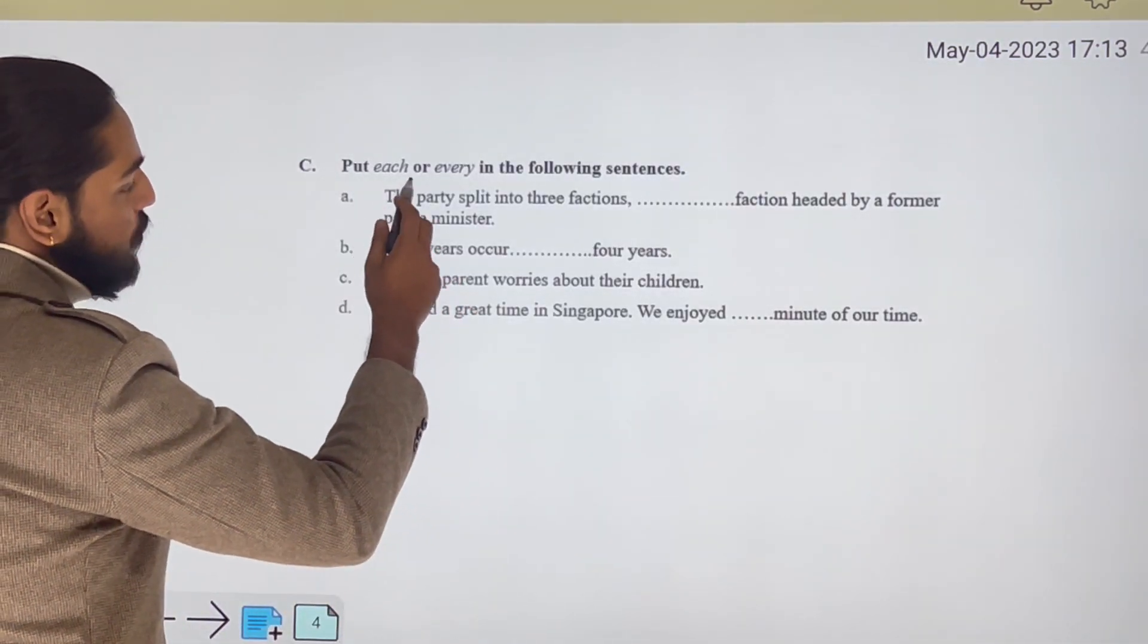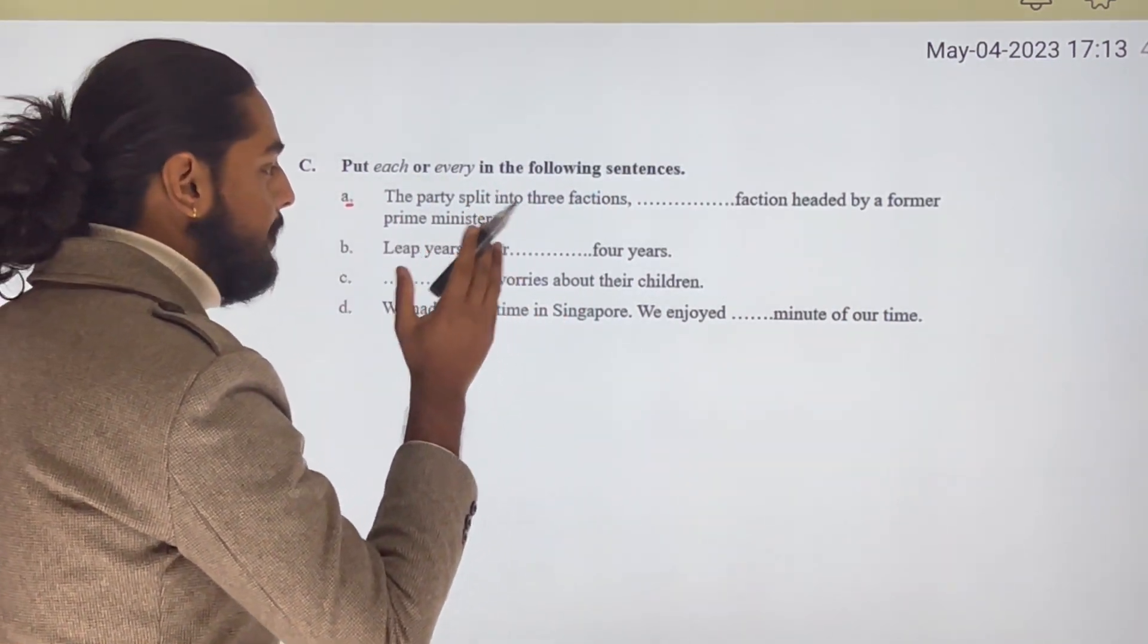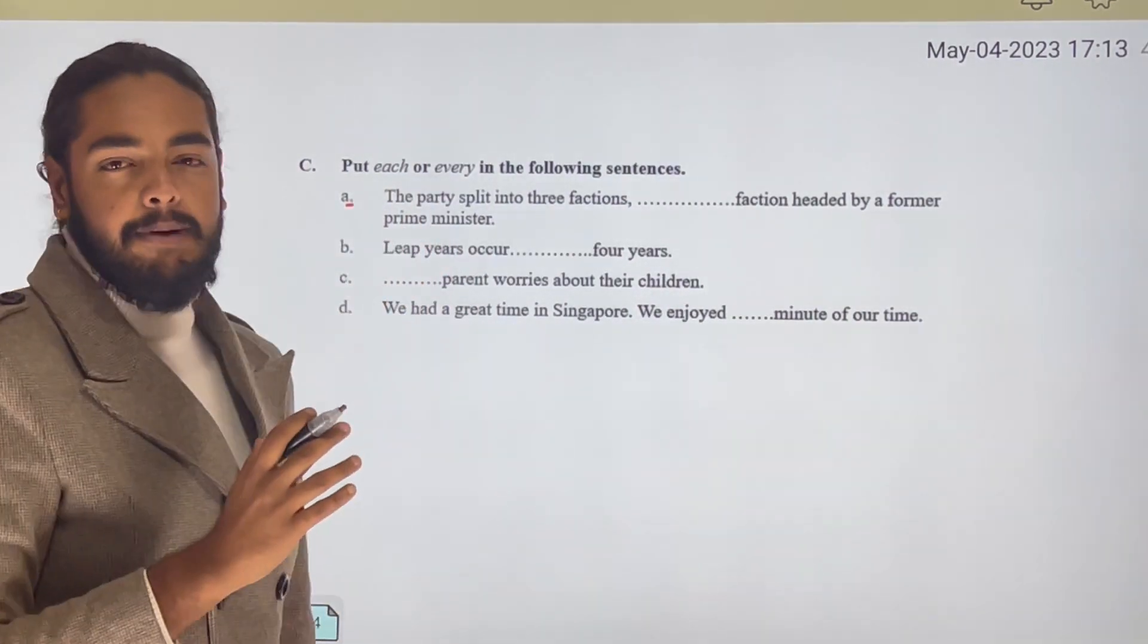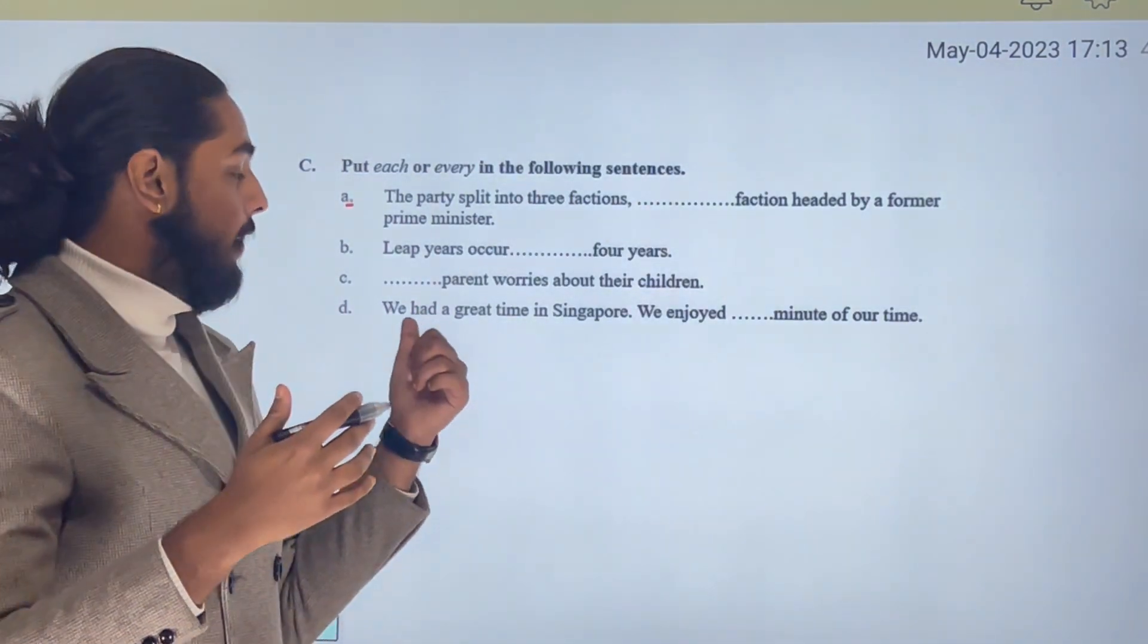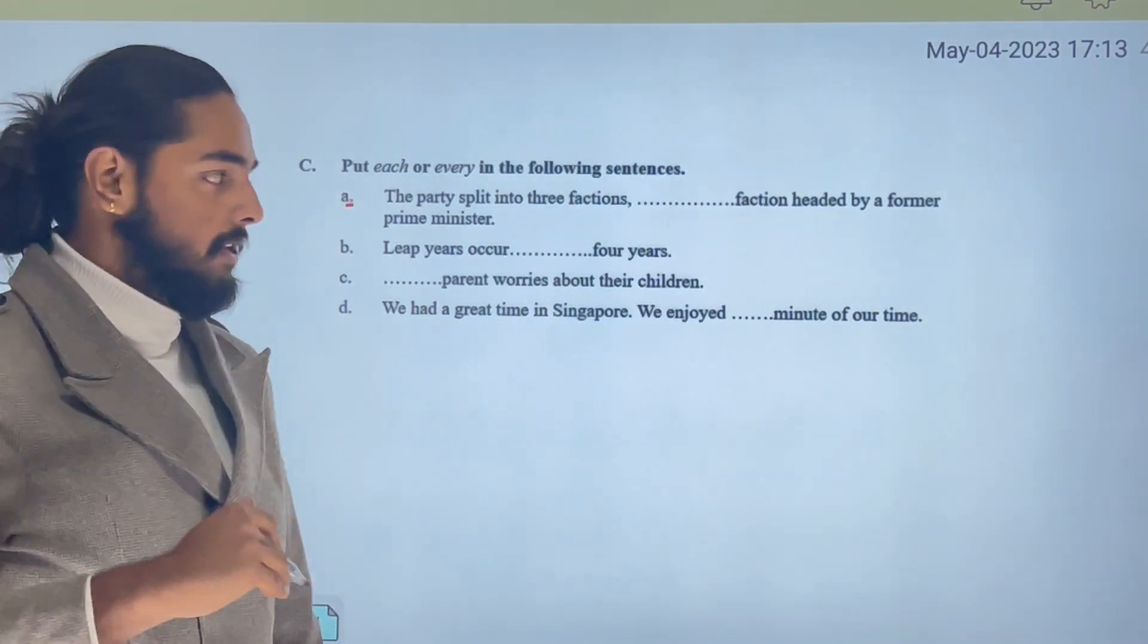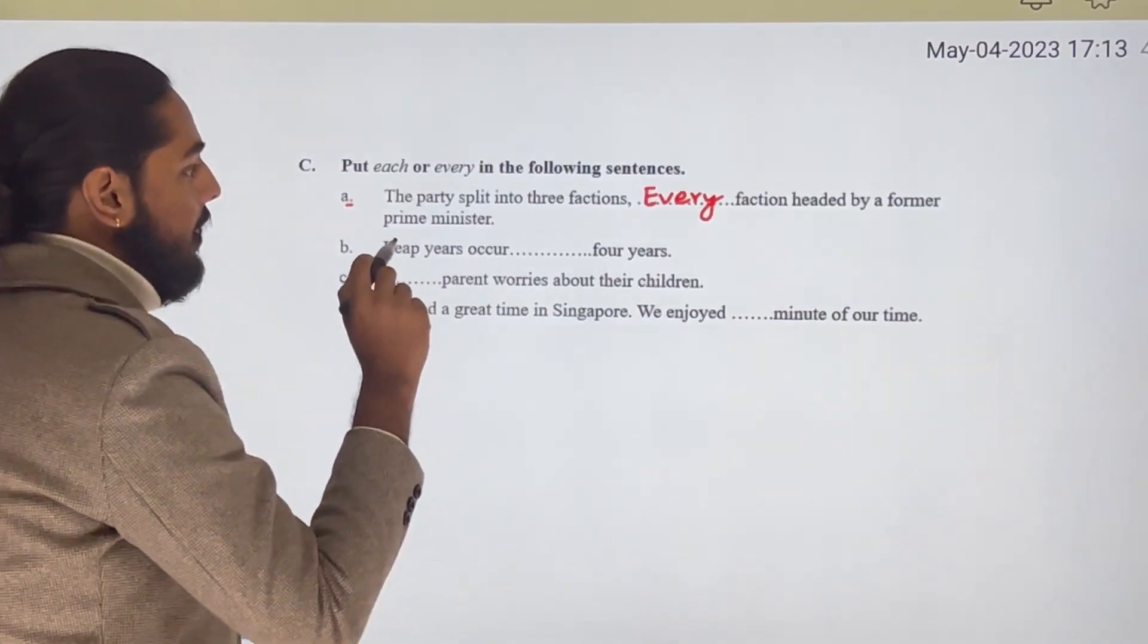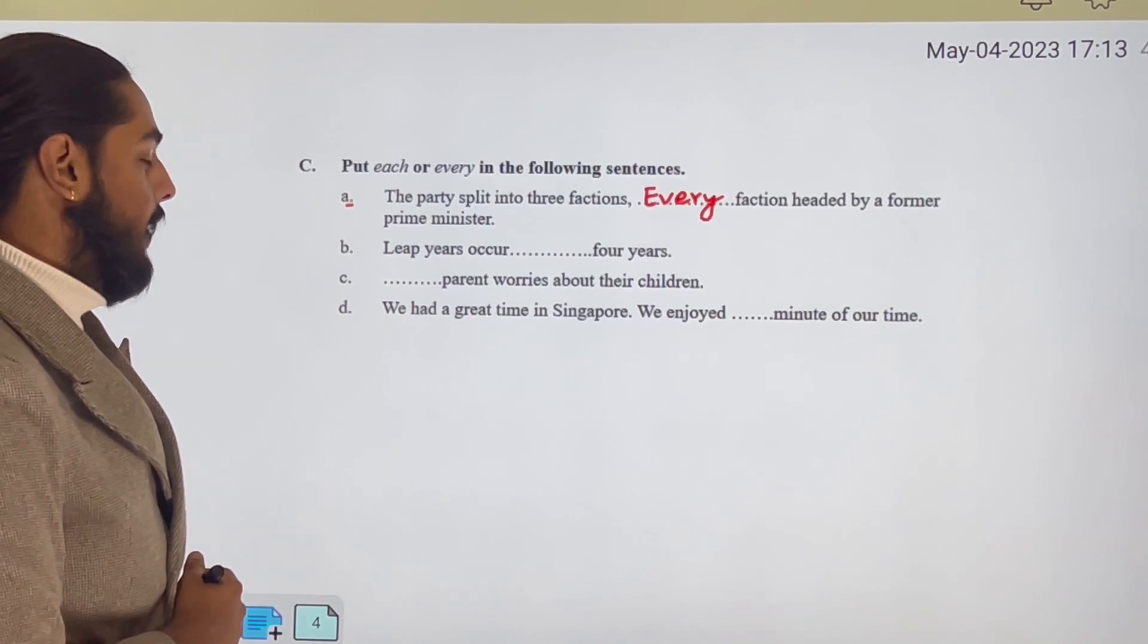Put each or every in the following sentences. Let's see. The party is split into three factions, factions headed by a former prime minister. So the party is divided into three parts. Now every faction is headed by a former prime minister.